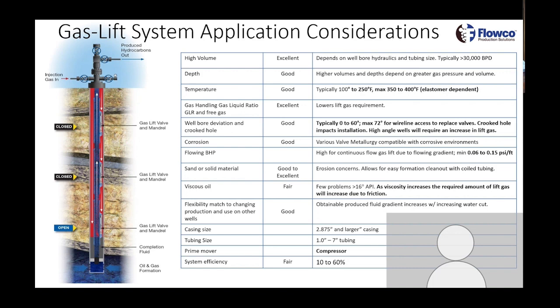Chemical also gets asked a lot — how does it affect your gas lift system? Chemical companies have come a long way. They're now considering the gas lift application type in their chemical formulations. Early on there was a lot of chemical residue buildup and batch treatments not necessarily catered toward what we were trying to do, but it's definitely different now. Also make sure your elastomers can hold up to those chemicals if they're being introduced in the injection stream.